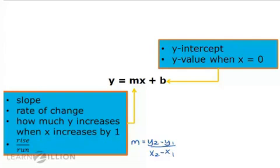If we have two points, we can also calculate slope using the formula y2 minus y1 divided by x2 minus x1. The y-intercept is b, which is the y value when x equals 0. We're going to use this linear equation to model scatterplots.